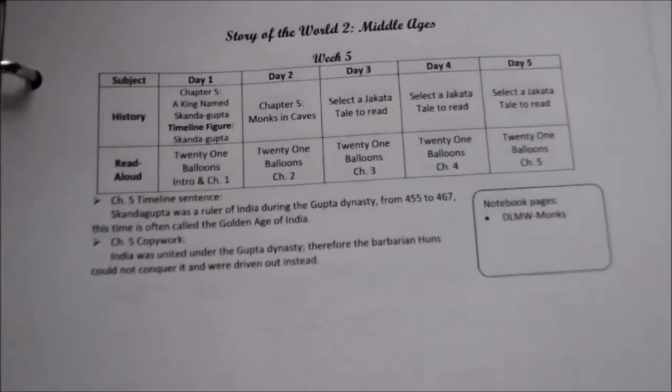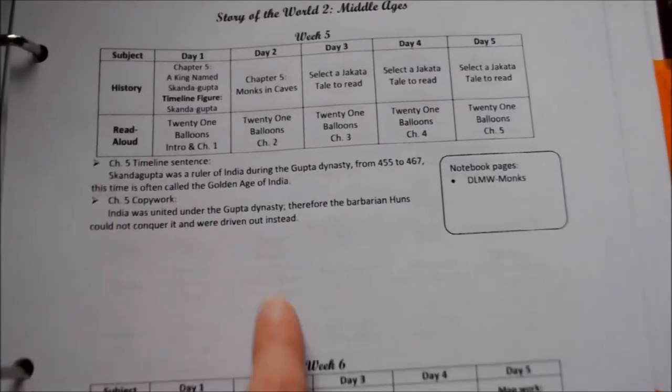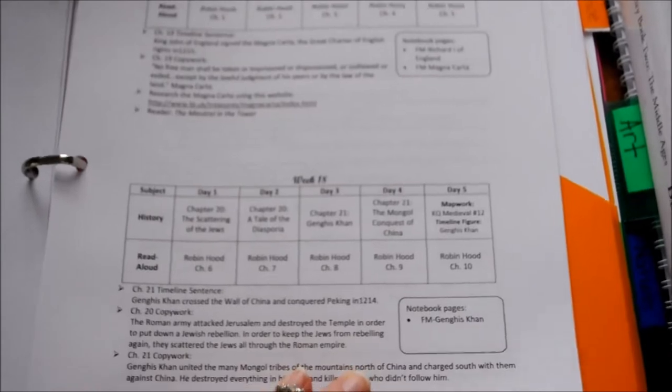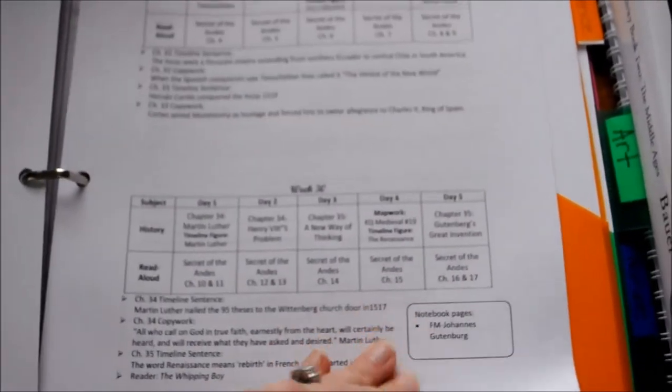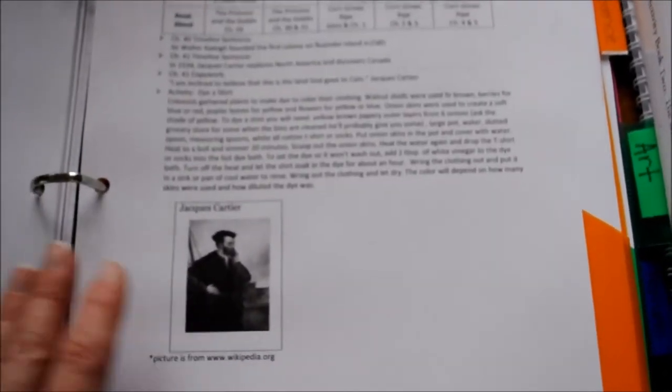So it's already laid out for me. So that is that, and it just keeps going. She has a whole, let me see how long this is. Thirty-five weeks, thirty-six weeks, sorry, thirty-six weeks.